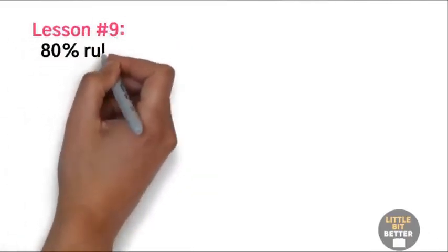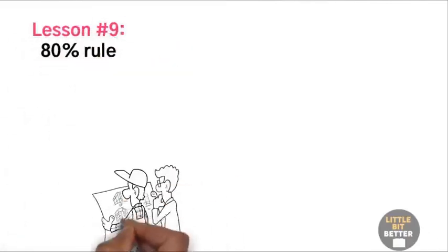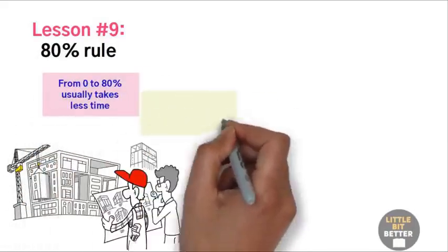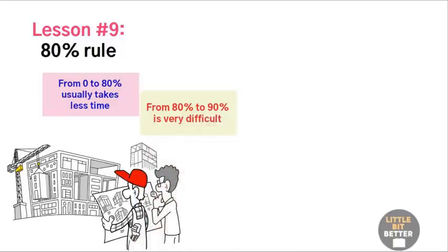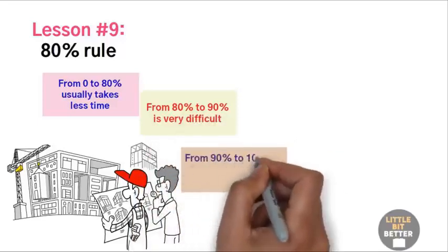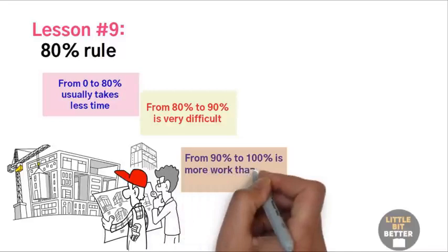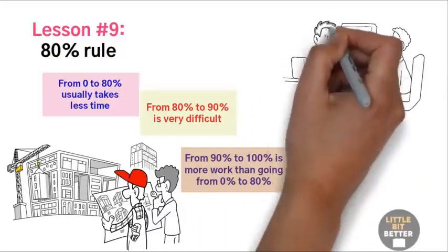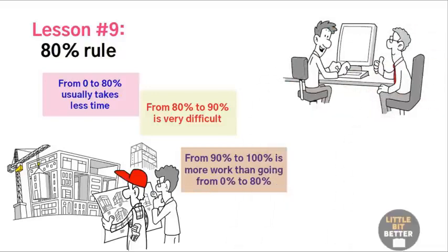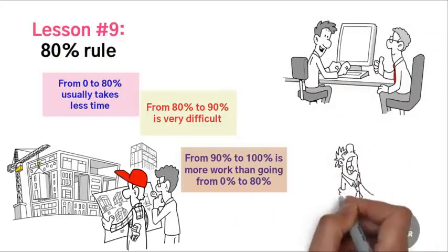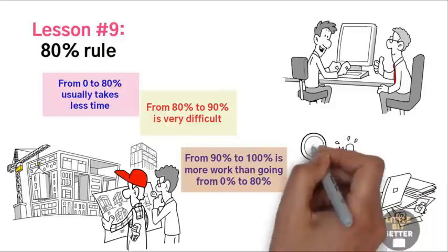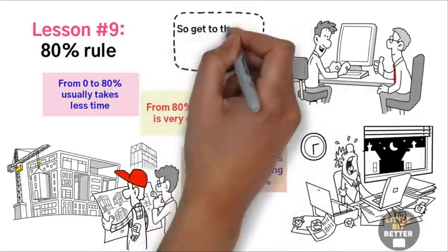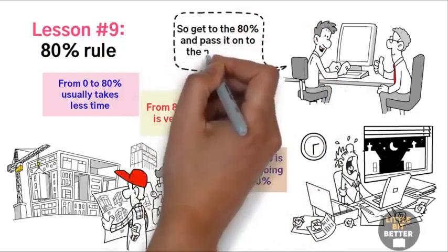Lesson number nine, 80% rule. You can get 80% of the project done quickly. From zero to 80% usually takes less time, from 80% to 90% is very difficult, and going from 90% to 100% is more work than going from 0% to 80%. That is why you need to know what you can do as a who, then quickly pass it on to the next who. The longer you take to perfect the idea by yourself before the feedback, the slower the transformational process will be. Nothing is ever truly finished, so get to the 80% and pass it on to the next who.